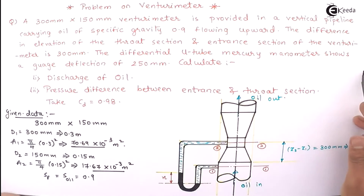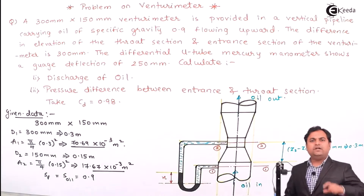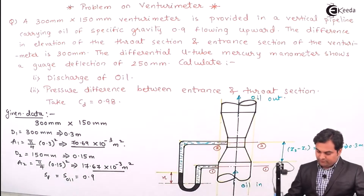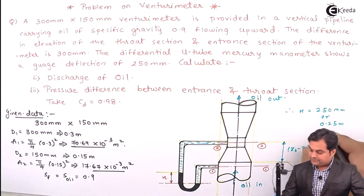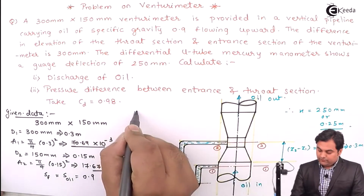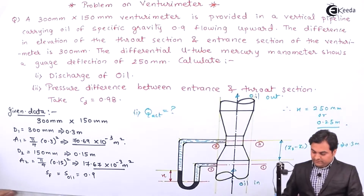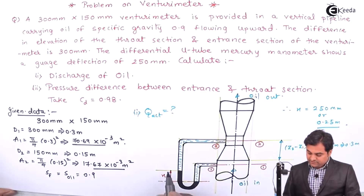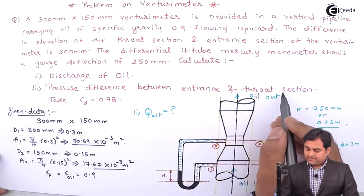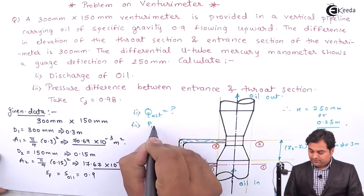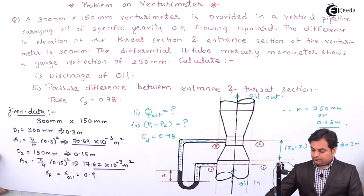The differential U-tube mercury manometer shows a gauge deflection of 250 mm. That gauge deflection is the height of mercury displaced, which is x. So x is equal to 250 mm or 0.25 meters. We have to calculate the actual discharge Q actual and the pressure difference P1 minus P2. The coefficient of discharge CD is given as 0.98.